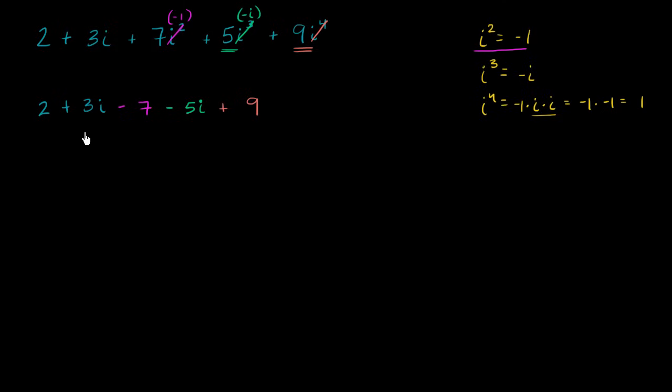Well, we have several terms that are not imaginary, that they are real numbers. For example, we have this 2 is a real number, negative 7 is a real number, and 9 is a real number. So we could just add those up. So 2 plus negative 7 would be negative 5. Negative 5 plus 9 would be 4. So the real numbers add up to 4.